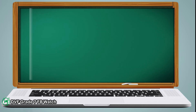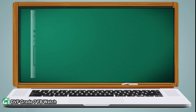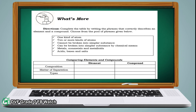Moving on to 'What's New' — in your paper, enumerate all the elements and compounds mentioned in the poem. Let's proceed with 'What Is It.' In the given illustration, identify which are the elements and the compounds, and just write 'element' or 'compound' in your paper. Next is 'What's More.' Complete the table by writing the phrases that correctly describe the element and a compound. Choose your answer from the words inside the box.